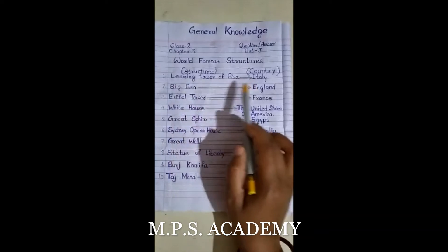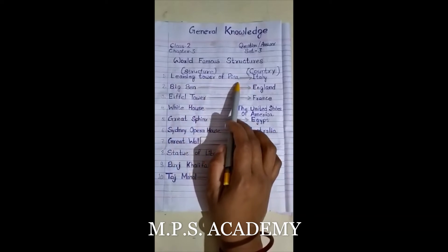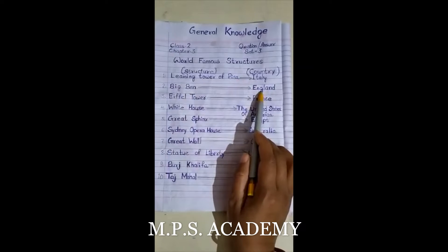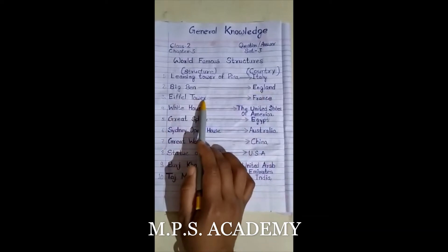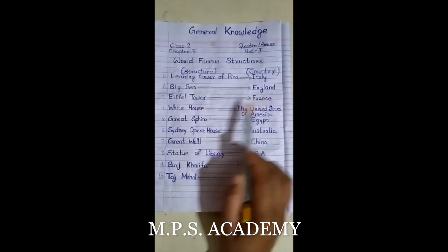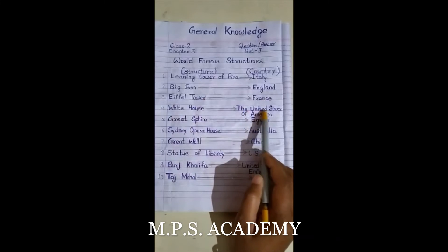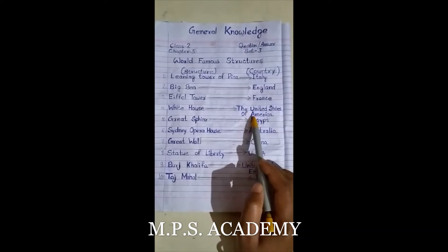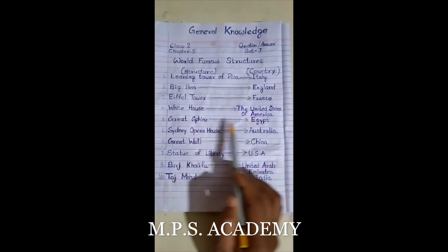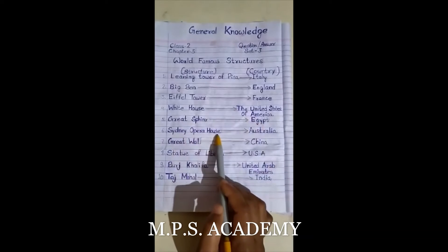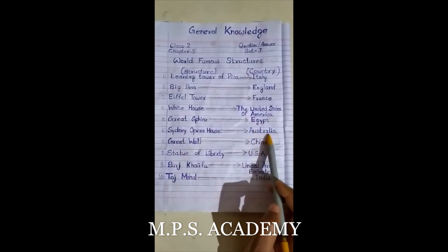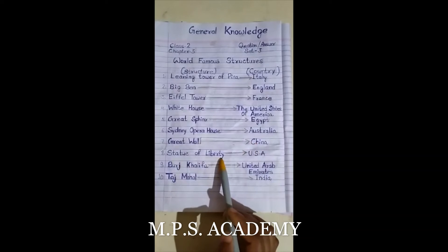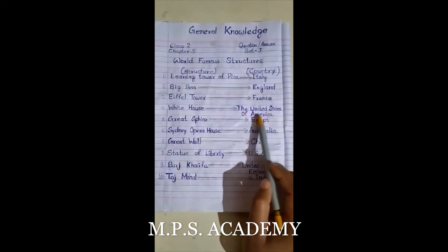Leaning Tower of Pisa — where is it? Italy. Big Ben is situated in England. Eiffel Tower is in France. White House is situated in the United States of America. Great Phoenix is in Egypt. Sydney Opera House is situated in Australia. Great Wall is in China. Statue of Liberty — the same, United States of America.